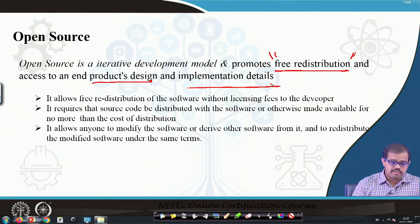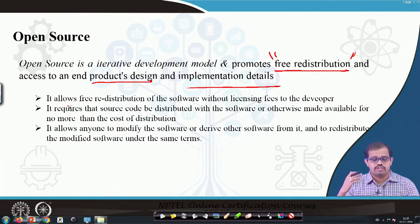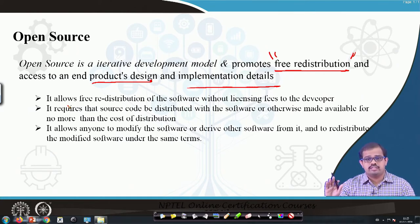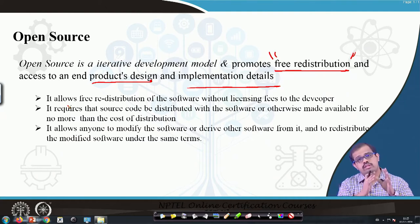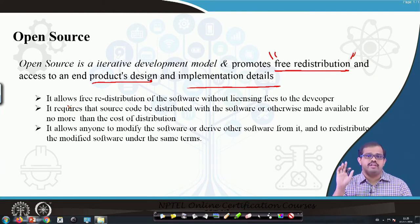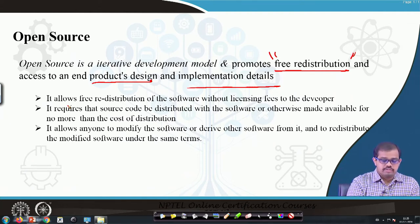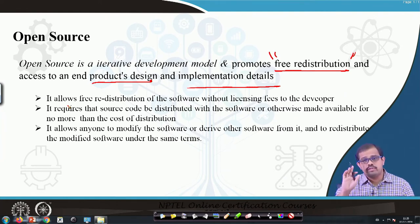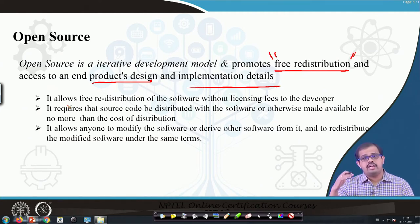Open source allows free distribution of the software without a license fee from the developer. Please keep in mind — it is not free of cost, it is without a licensing fee. When you buy software, you are paying for the licensing fee, not for the science behind it. You are paying for the design and the way that software has been built. Today, open source software is capable of handling any kind of data and has every capability of proprietary software.